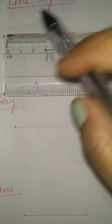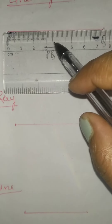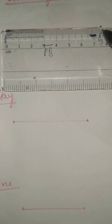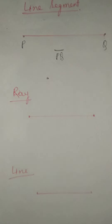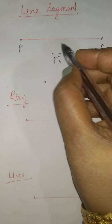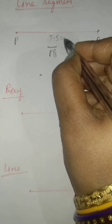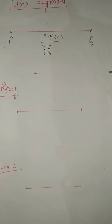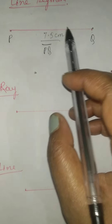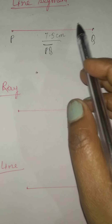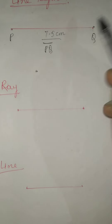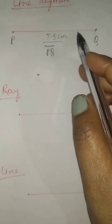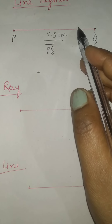It measures 0, 1, 2, 3, 4, 5, 6, 7, 7.5 — so we have got the measurement: it is 7.5 cm. This line segment is measured with the help of a ruler, as I have shown. And it is a part of a line.